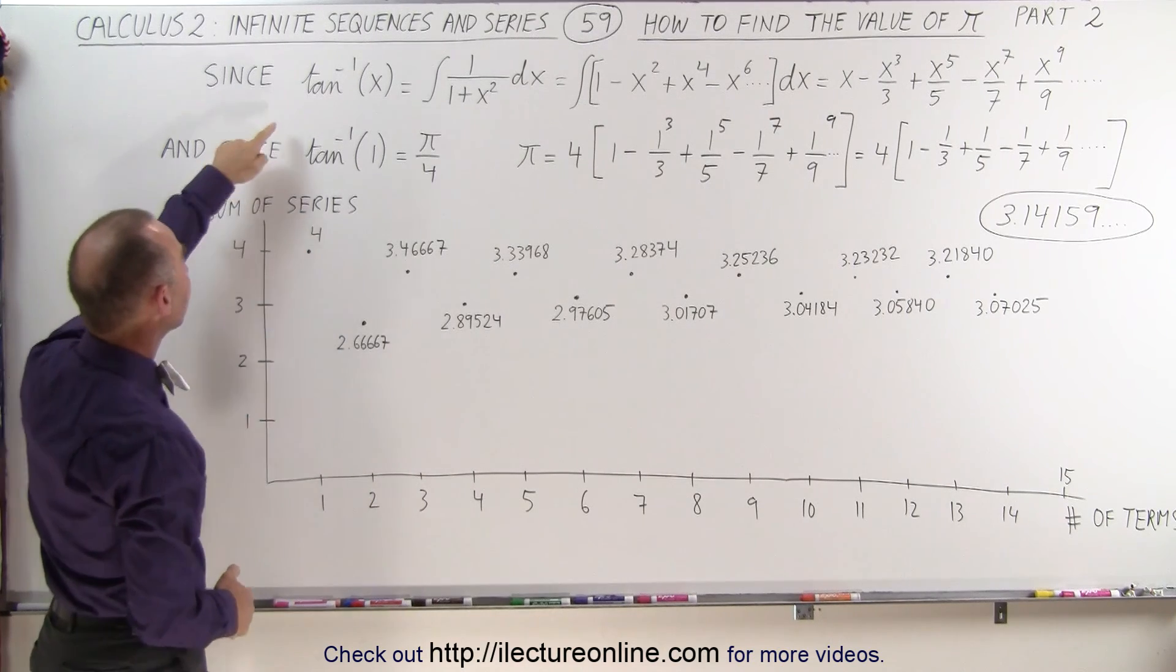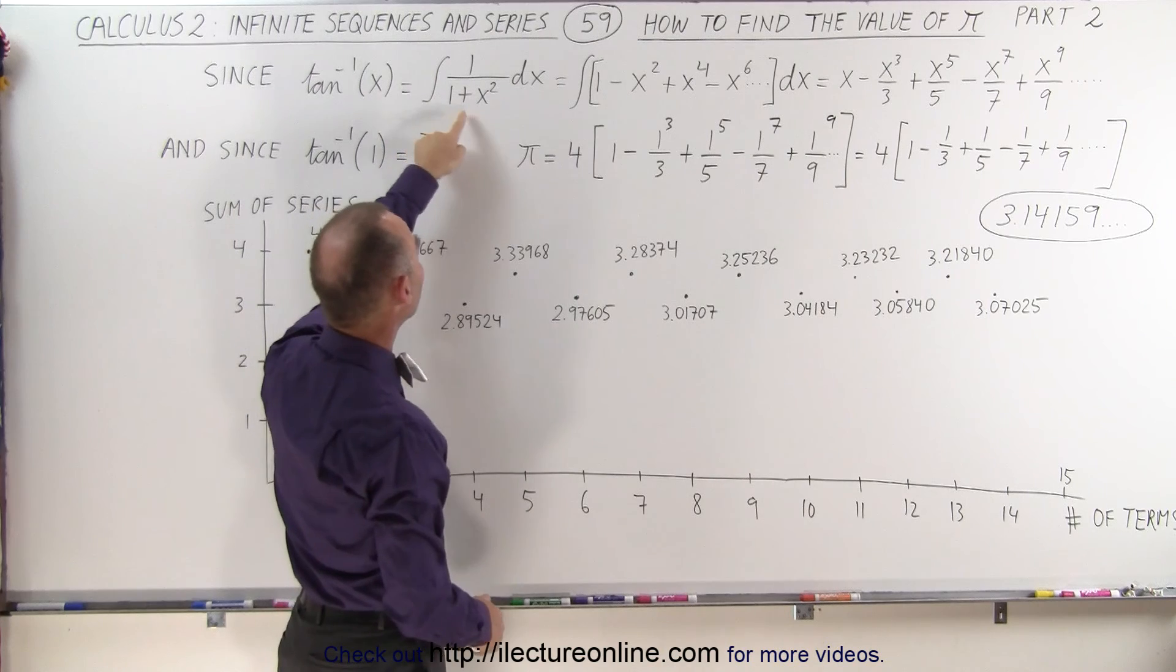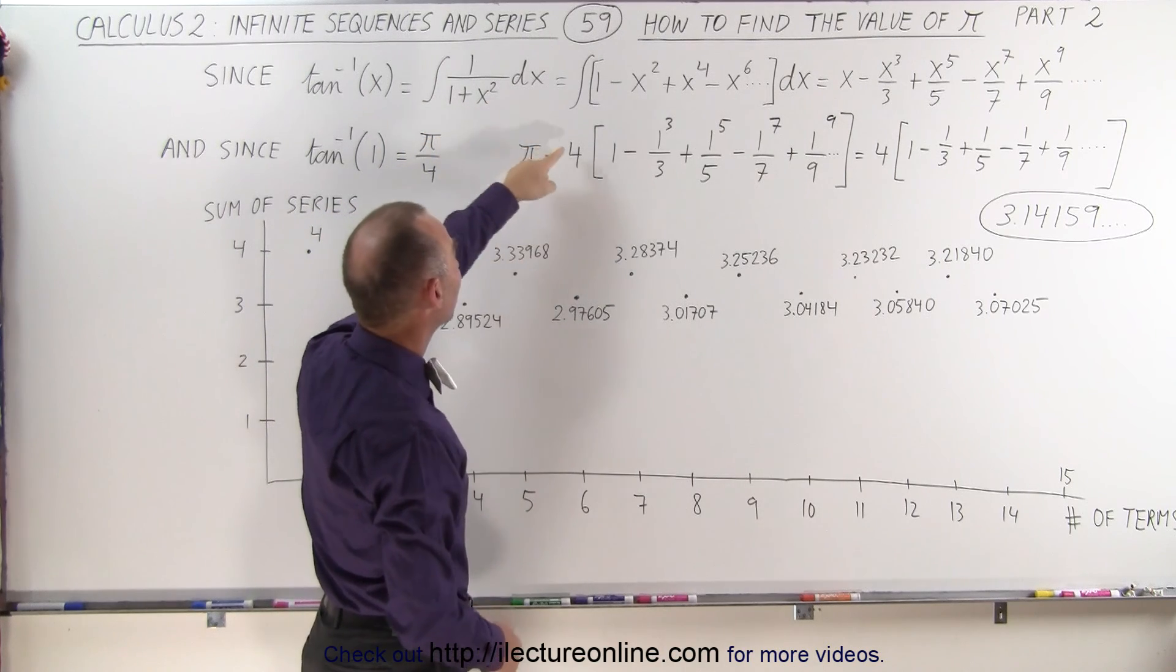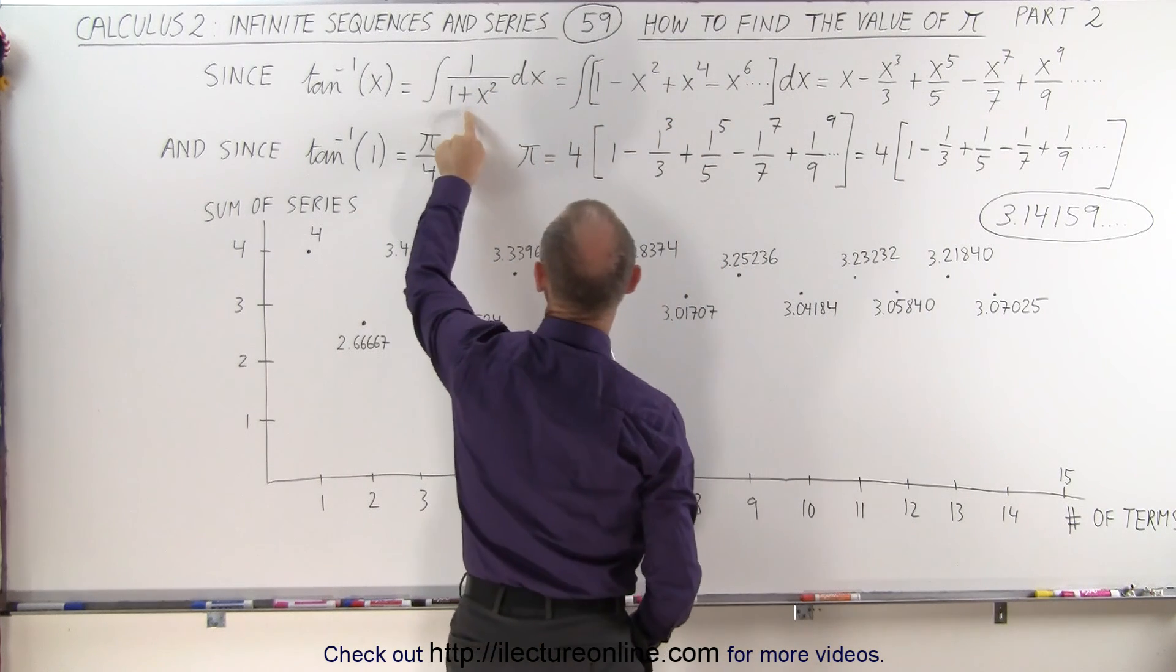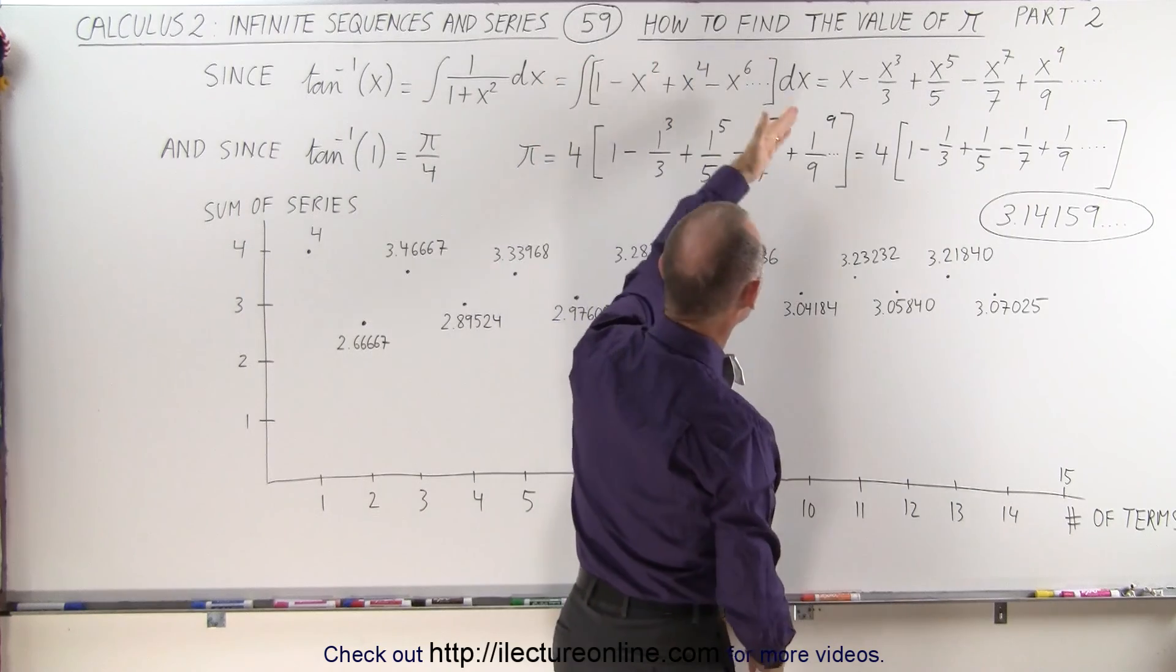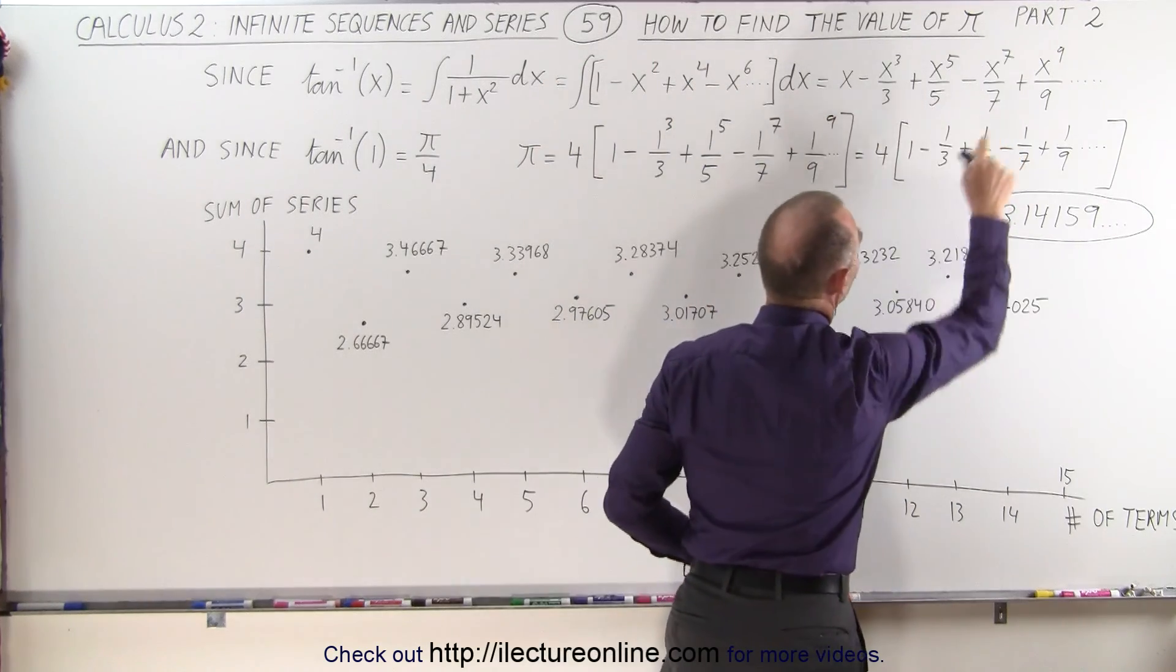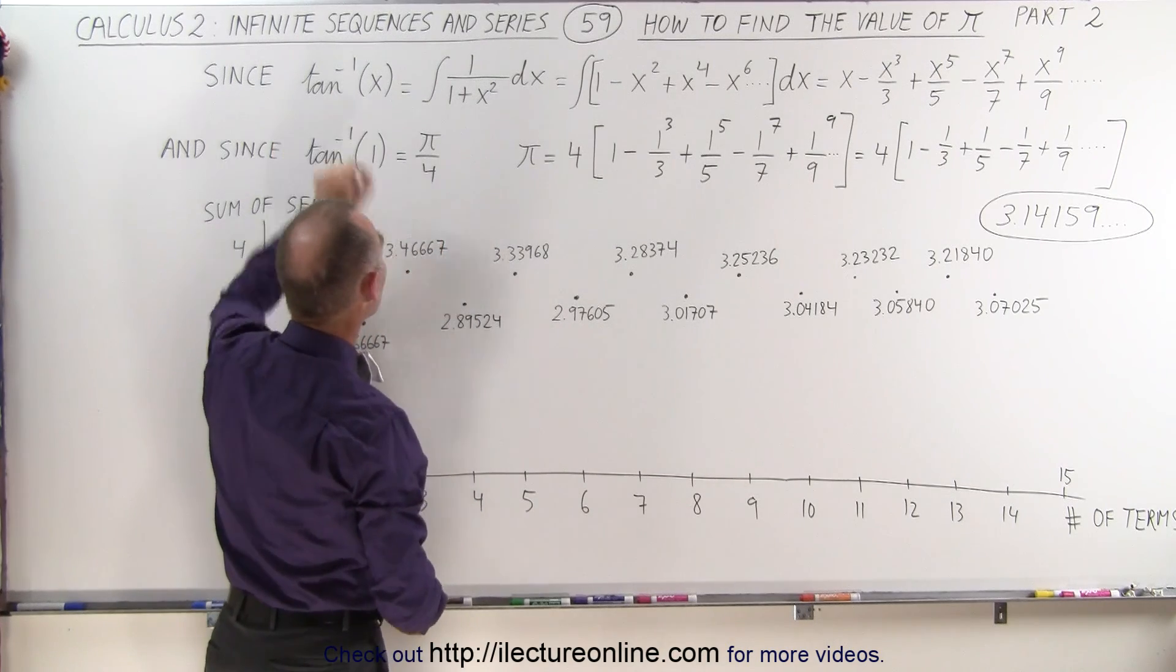As we saw, the arctangent of x can be written as the integral of 1 over 1 plus x squared dx, which means it's the integral of the infinite series representing this particular fraction, 1 over 1 plus x squared. If we then take the integral of that, we end up with this infinite series, the power series of the arctangent of x.